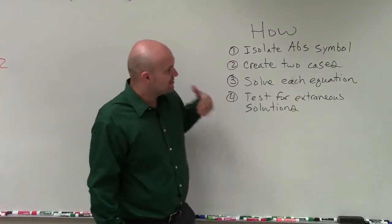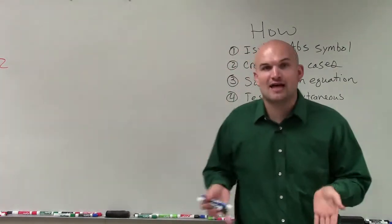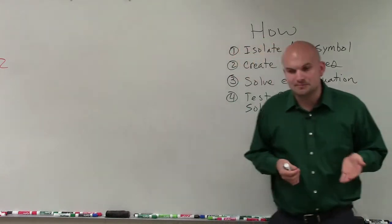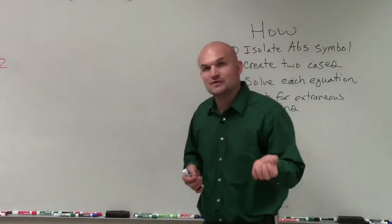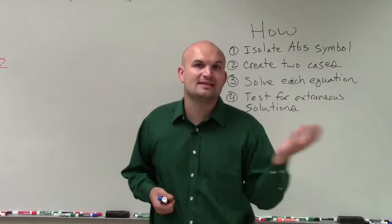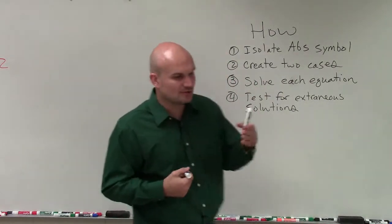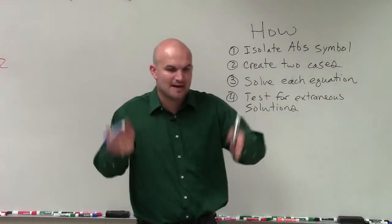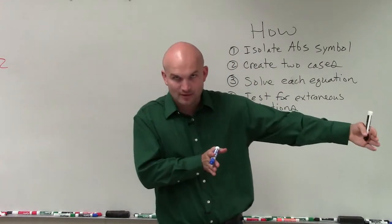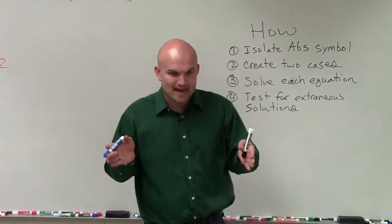Once you have the absolute value solved, we need to create our two cases. Two cases for values that can provide us with a value that is going to be positive or negative within the absolute value equation. So to do that, when we create our two cases, we're simply going to create a case where whatever's in the absolute value is equal to whatever's on the right-hand side.